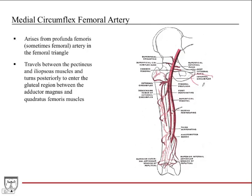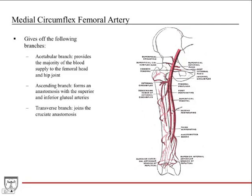The medial circumflex femoral artery — labeled internal circumflex in this diagram — arises from the profunda femoris, sometimes from the femoral artery itself. It travels between the pectineus and iliopsoas muscles, then turns posteriorly to enter the gluteal region between the adductor magnus and quadratus femoris muscles. This is the major blood supply to the hip region. It gives off an acetabular branch providing the majority of blood supply to the femoral head and hip joint, an ascending branch forming an anastomosis with the superior and inferior gluteal arteries, and a transverse branch joining the cruciate anastomosis.